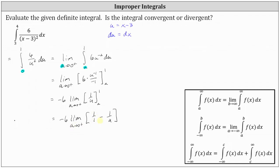Then we have minus one divided by a. One divided by a approaches positive infinity as a approaches zero from the right, because we're dividing one by smaller and smaller positive values. But then we're subtracting that value, so minus one divided by a approaches negative infinity, giving us negative six times a value approaching negative infinity. Since a negative times a negative is positive, the value of the original limit approaches positive infinity. Since positive infinity is not a real number, we say the integral diverges or is divergent.